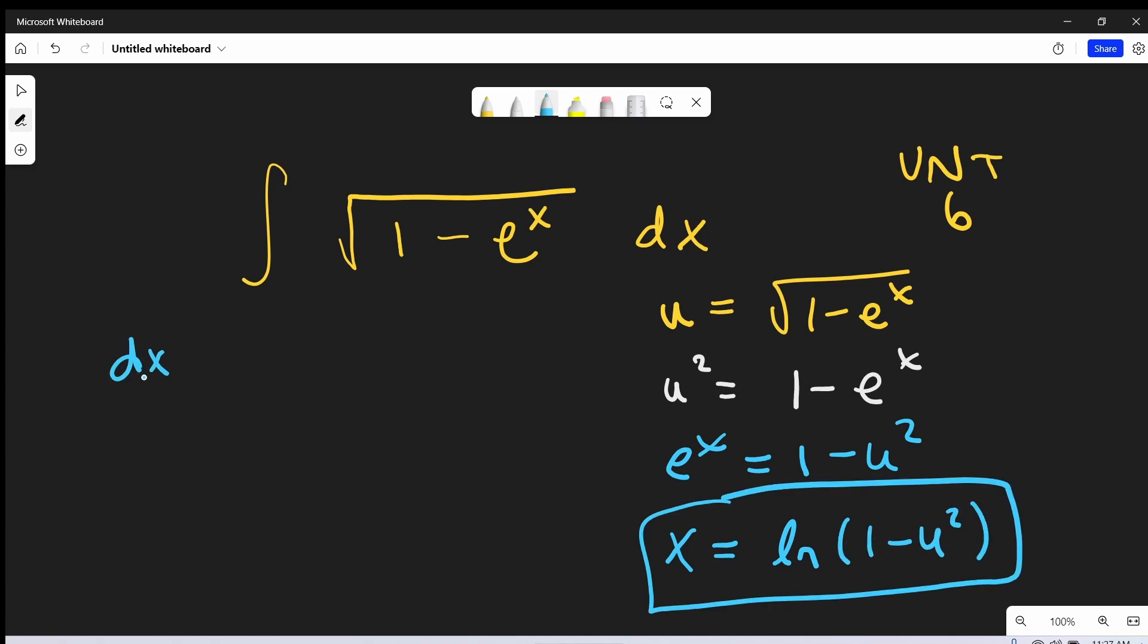Now I'll take a derivative, and we'll find our dx value. Derivative of natural log is going to be 1 over 1 minus u squared, but we need the chain rule. The derivative of this piece is going to be minus 2u du.